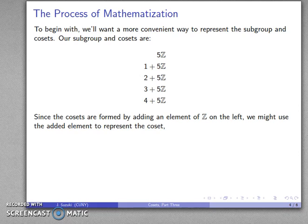Now, we might consider that this added element is what's going to distinguish the cosets. Because cosets are either disjoint or identical, once I know what element I'm using here, I can use that to represent the entire coset. So I'll represent this coset with a 1, this with a 2, this with a 3, and so on.